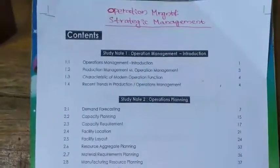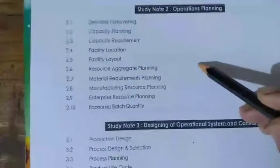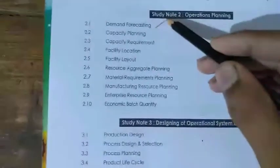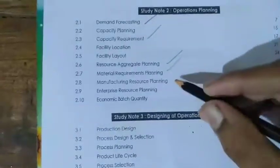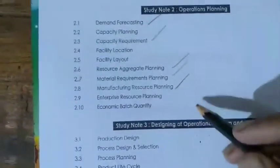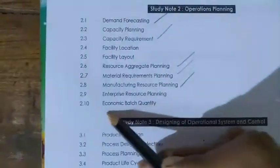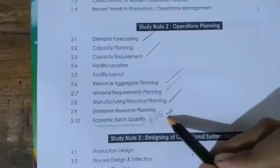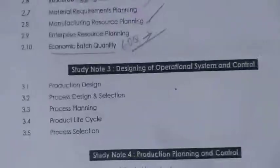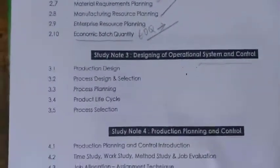Chapter 1 contains one-word questions. The second chapter is an important chapter — this is 90% theory. The main items are forecasting, capacity requirement planning, resource aggregate planning, material requirement planning, and manufacturing resource planning. The last topic is the Economic Order Quantity, the EOQ, which is a theory-based chapter.